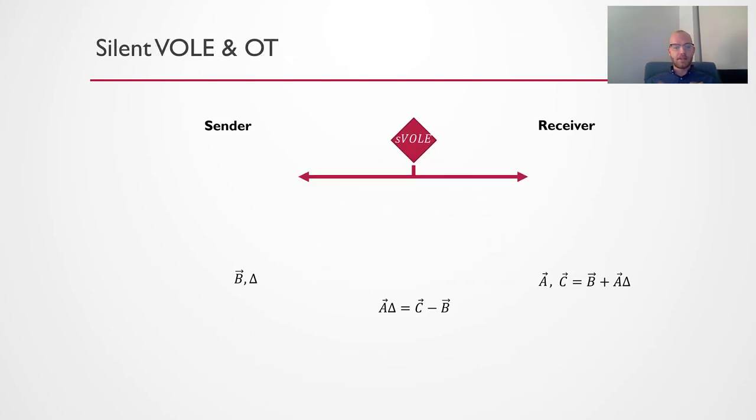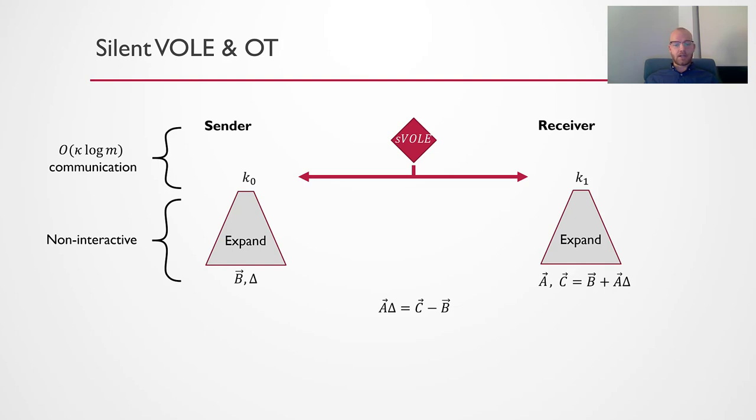Another property that we want is this silent feature where the protocol itself is only a setup protocol in that it has low communication and outputs some small keys to the sender and receiver. Then by local computation only, they're able to expand these keys into the final VOL correlation. In particular, the setup should be sublinear in the size of the vectors and the expansion should be non-interactive. Our VOL protocol that we use in this talk is in fact silent in this way. It's a nice property because it allows you to get less communication, and you can front-load the communication during a setup phase, and then go offline or store the keys for later use.